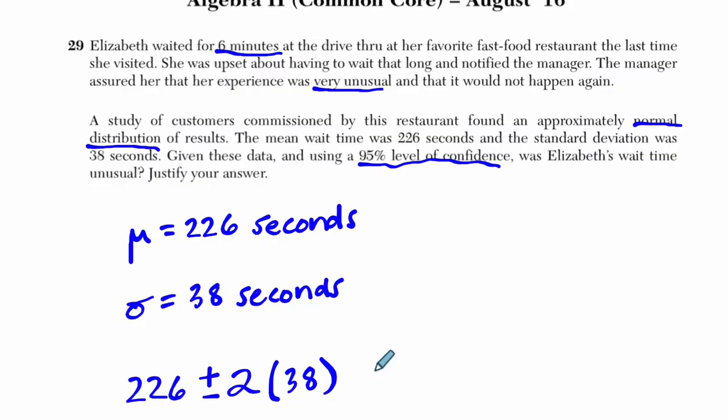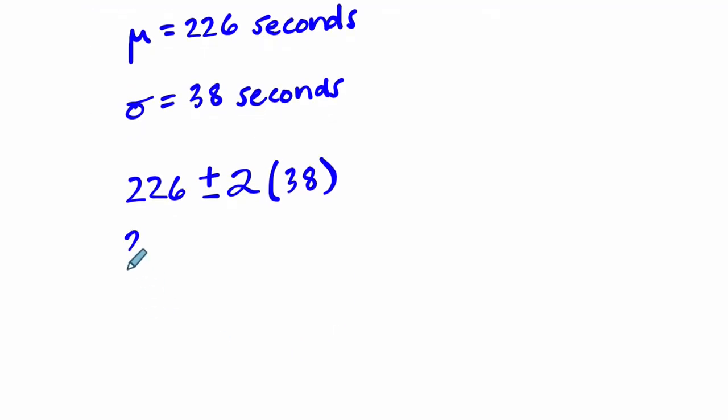If you do this, you're going to get two things. First, 226 plus 2 times 38, and then 226 minus 2 times 38. This gives us 302, and 226 minus 2 times 38 is 150.